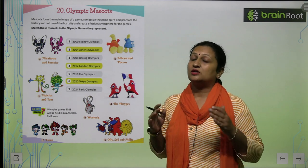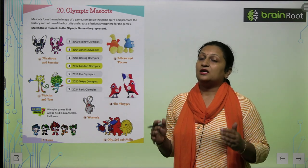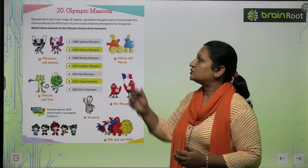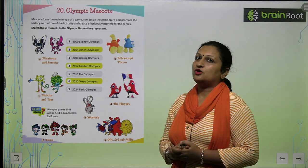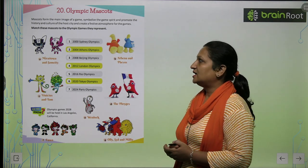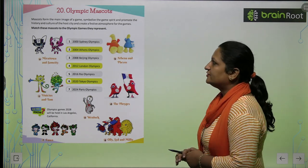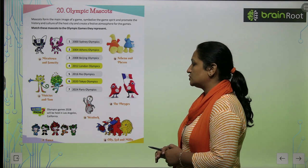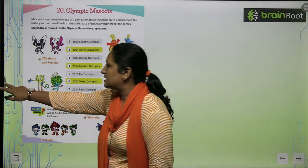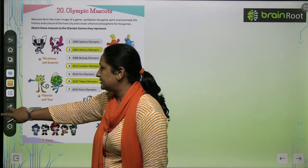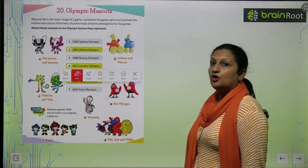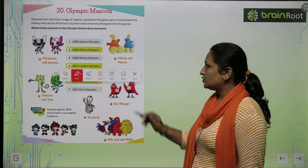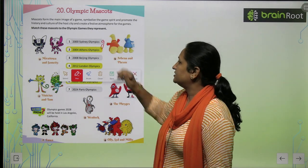So, the Olympic games — let's see which mascot was in which year and where it was. First one: 2000 Sydney Olympics. The mascot of the 2000 Sydney Olympics was Oli, Sid and Mili. You will write G here.